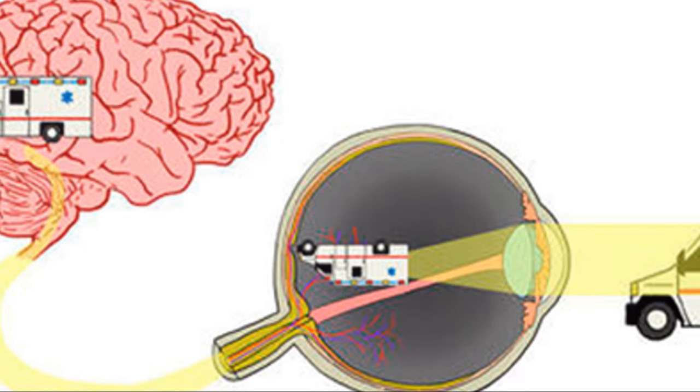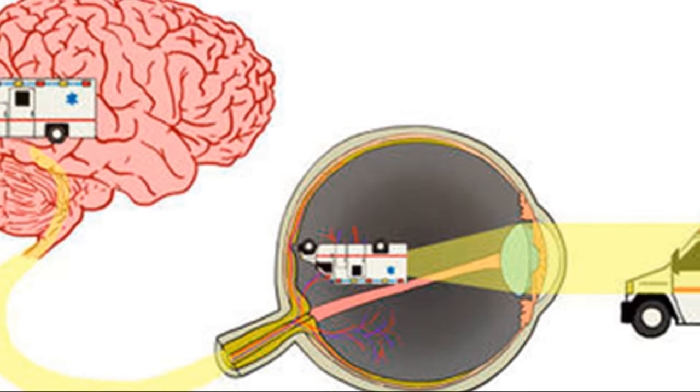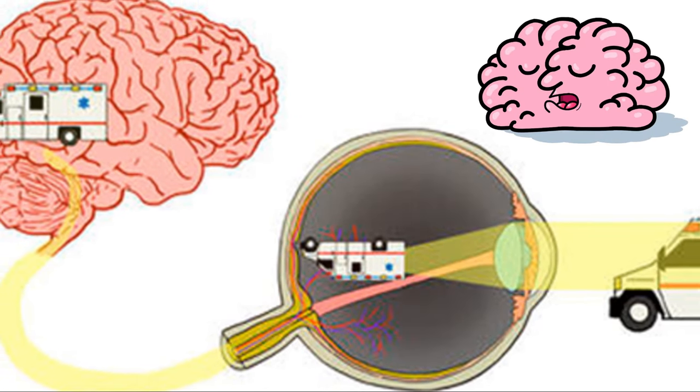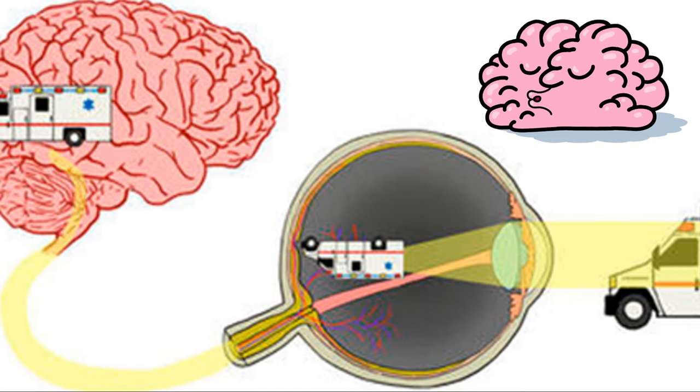Similarly, the retina catches the world inverted and mirrored. The brain takes this topsy-turvy image and flips it right side up, giving us the correct view of our surroundings. Incredible, isn't it? Our brain works tirelessly to make sense of what our eyes see.